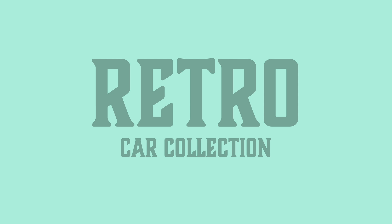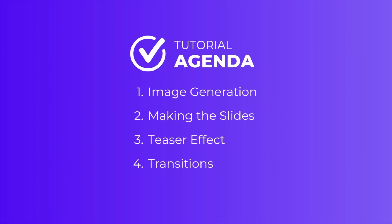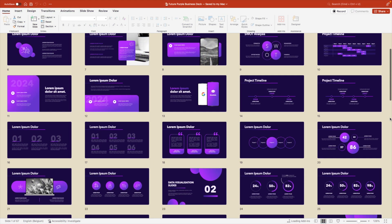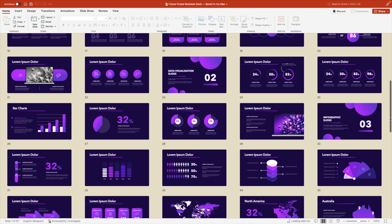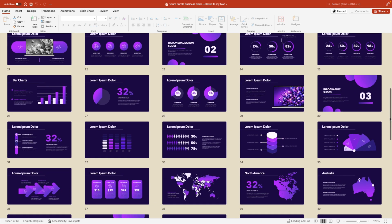This tutorial is split up into multiple parts. First, we'll look at the image generation — I'm going to show you the prompts I use to generate the images. Secondly, we'll look at setting up the slides. Then we'll look at adding that teaser effect, and eventually the animation part and the push transition. I also make fully made templates available that you can download via the link in the description below.